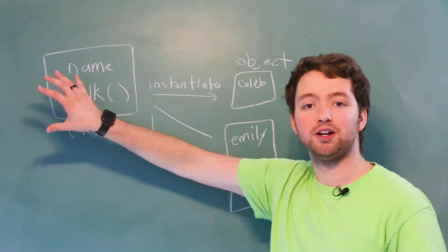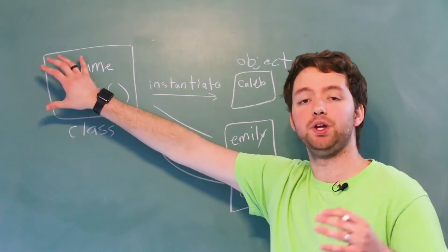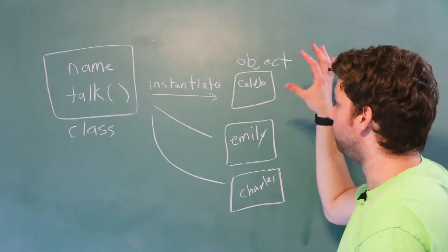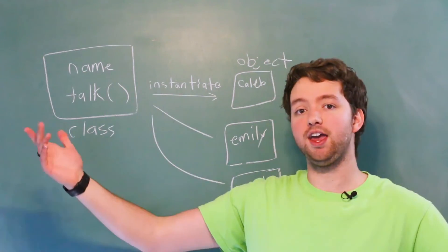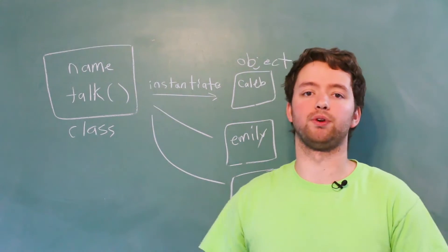So at some point, a string class was created and we instantiate that class to make numerous string objects, which might have a specific value of, hey, what's up? Or hello world, whatever it might be.